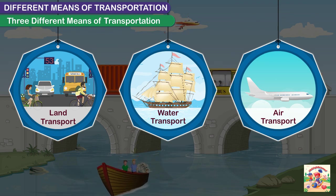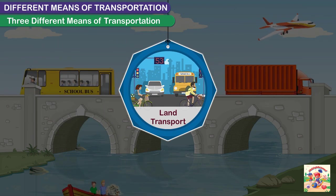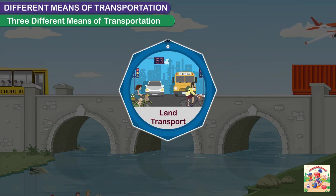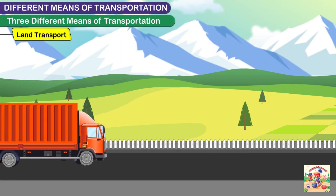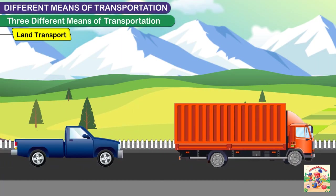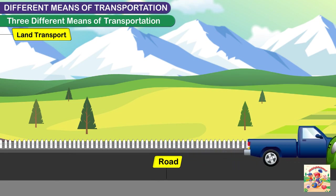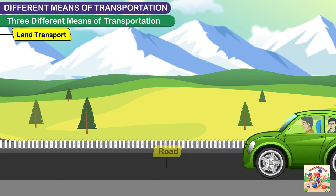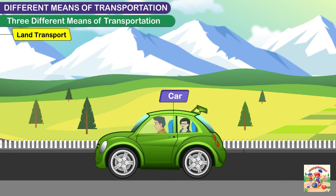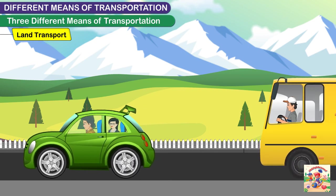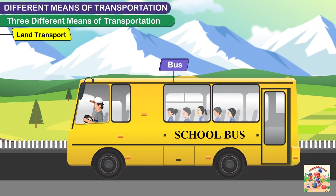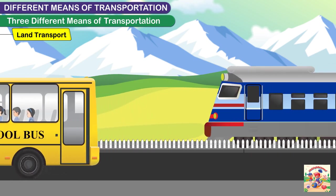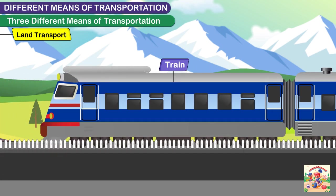Land transport includes all the vehicles that travel on road. For example, car, bus, train, etc.